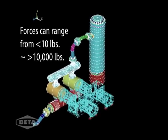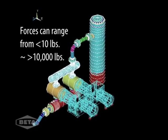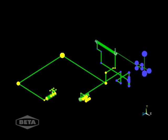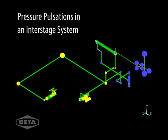Forces from pulsations can range from less than 10 pounds to over 10,000 pounds. Here is an example to illustrate pressure pulsations in an interstage system, from discharge through the cooler and back to suction for the next stage. The pulsations are indicated by color pressure points.